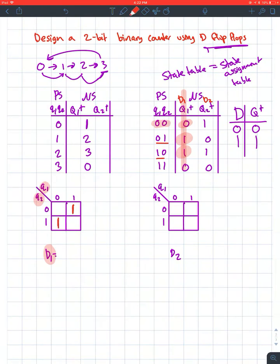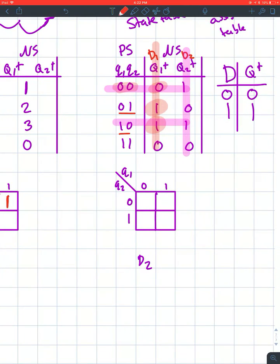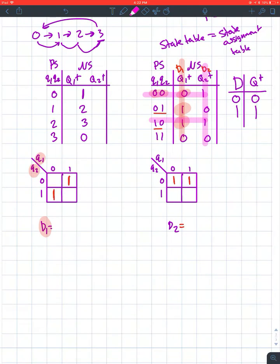Looking at D2, I'll look at the next column. I'm going to see where I have my 1s. My 1 is in this row and this row, so I'll fill those cells out in the D2 K-map. I have a 1 here and a 1 at 10.